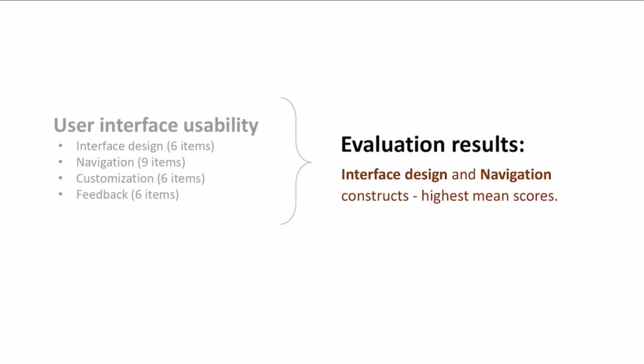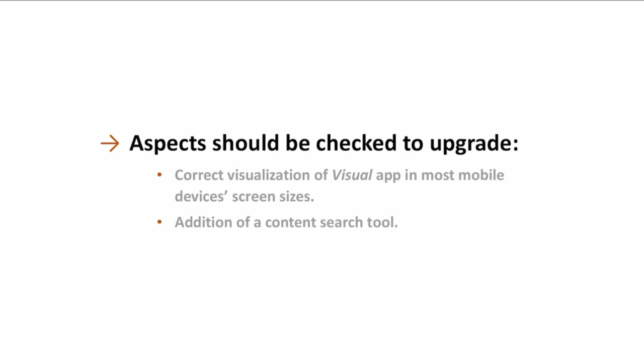Interface design and navigation constructs have the highest mean scores. However, some aspects should be checked to upgrade — for example, the correct visualization of the Visual app in most mobile device screen sizes, and the addition of a content search tool.